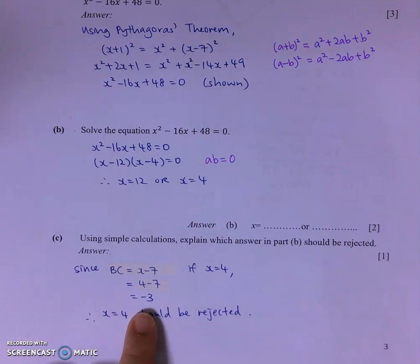I would actually get a negative length for BC which does not make sense because the length of a triangle should all be positive. So I would reject X equals to 4.